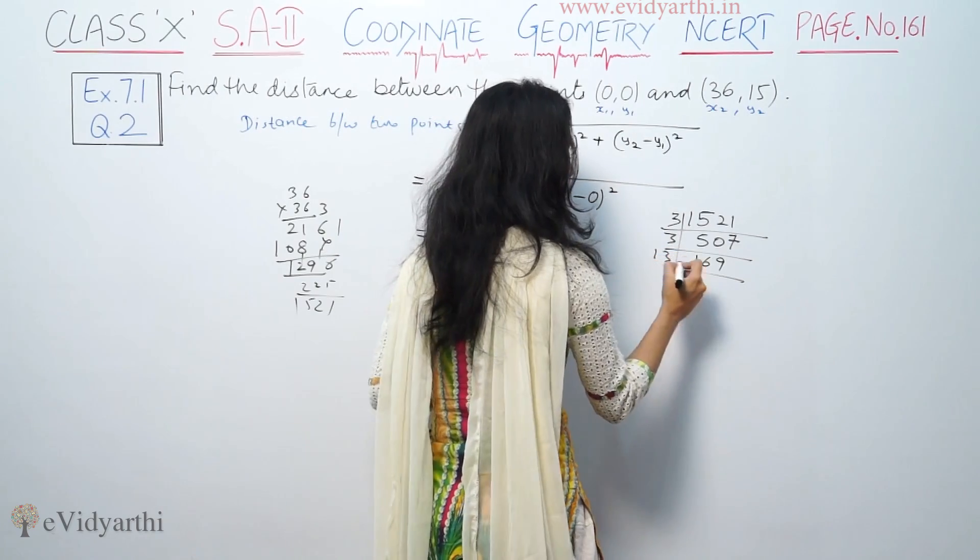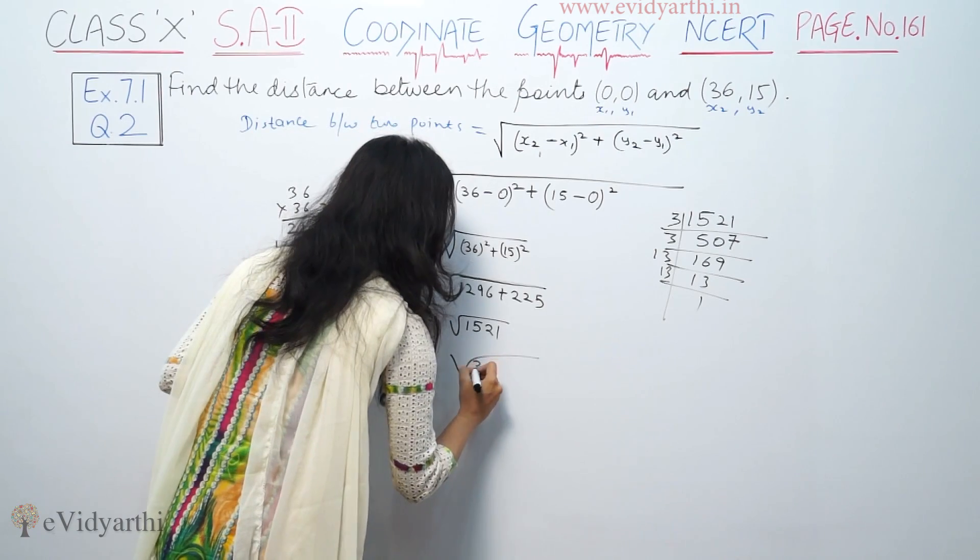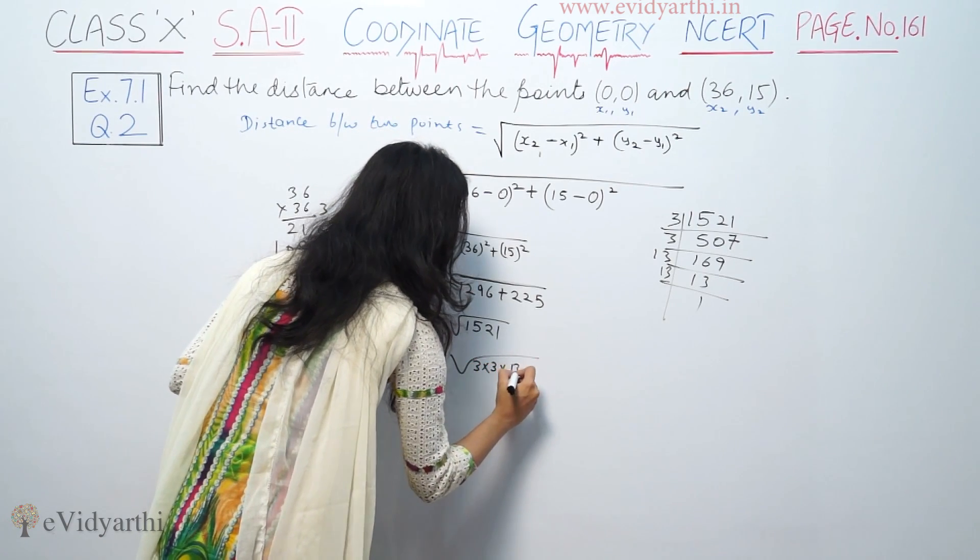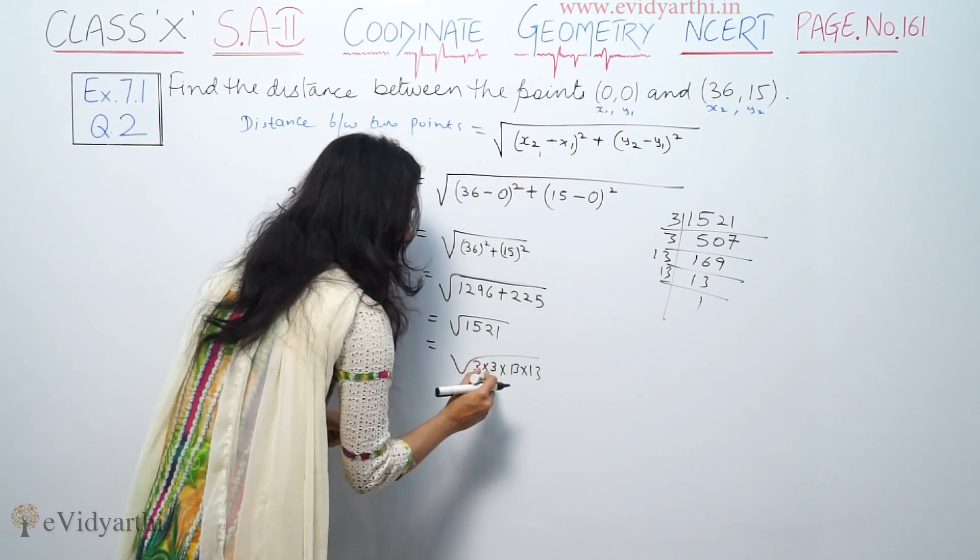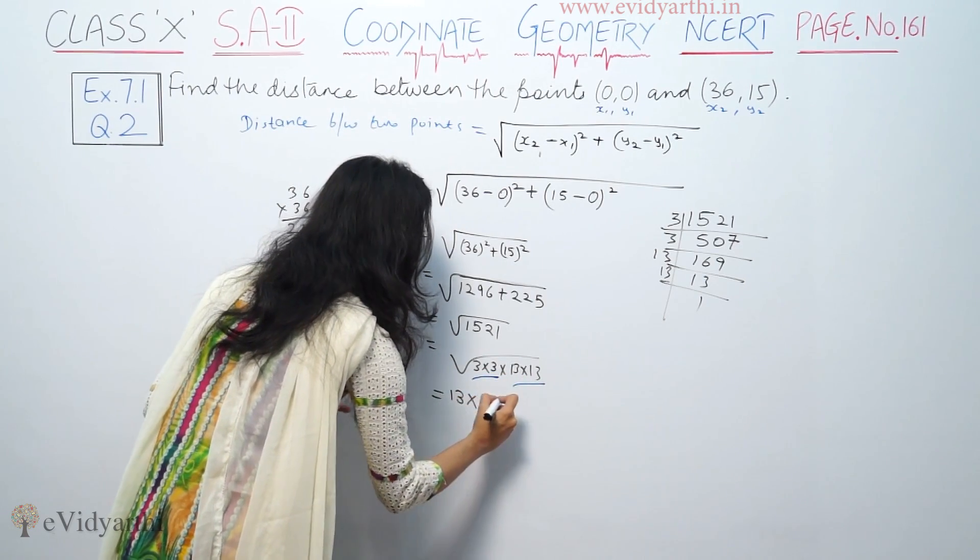Let me check: 3 goes into 1521, giving 507, then 3 again gives 169, which is 13 times 13. So under the square root we have 3 into 3 into 13 into 13. When we make pairs, one pair of 3 and one pair of 13 come out. The square root is 13 into 3.